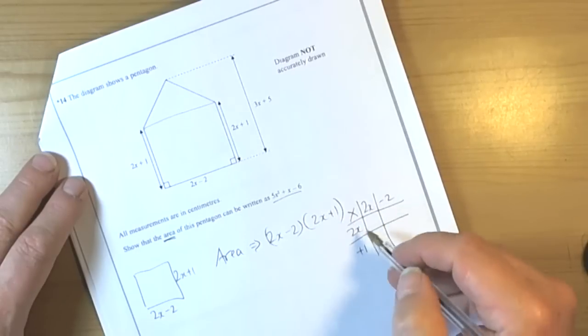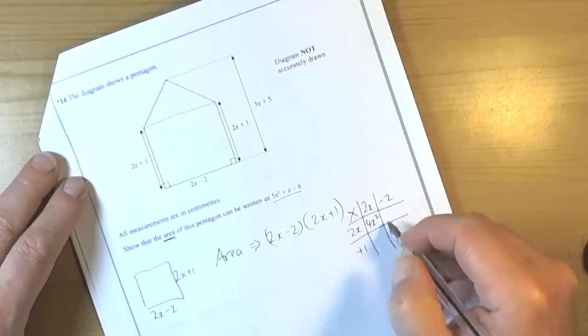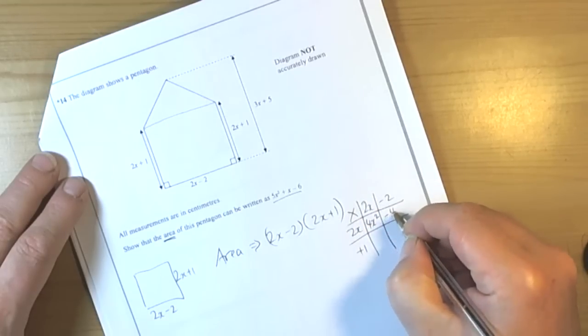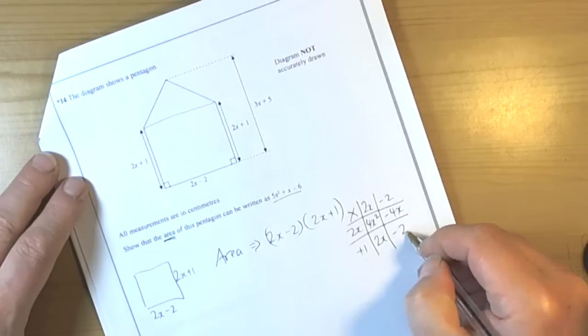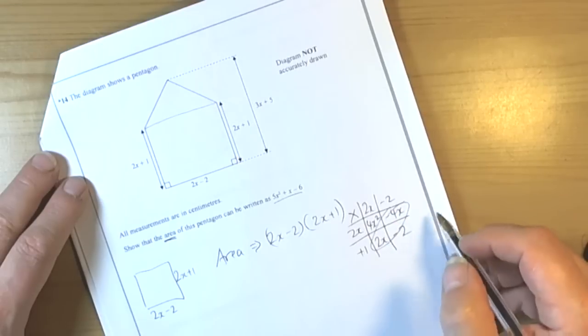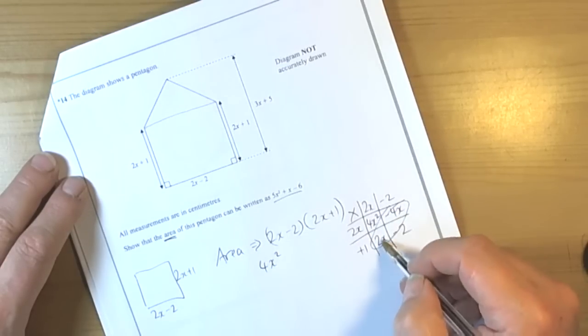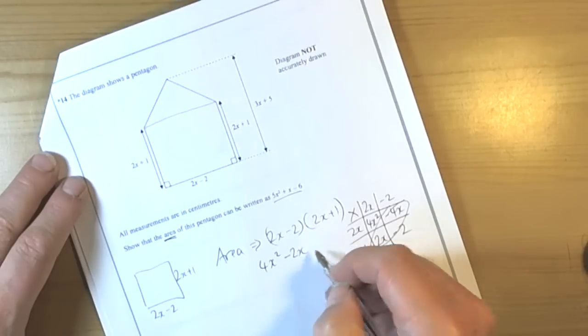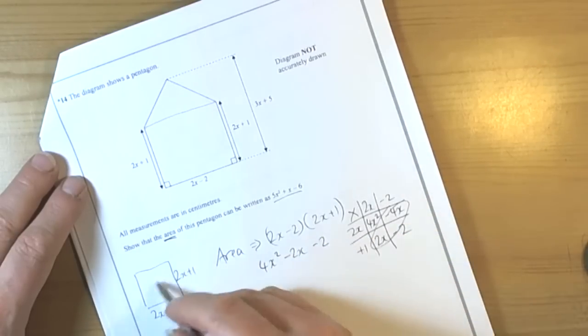So we've got 2x times 2x which makes 4x squared. We've got 2x times negative 2 which makes negative 4x and we've got 1 times 2x which is 2x and 1 times negative 2 which is take away 2. So that's the rectangle.